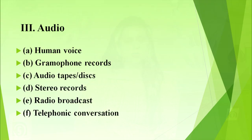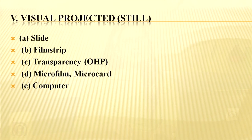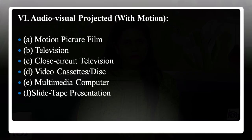The third type, audio, includes human voice, gramophone records, audio tapes and discs, stereo records, radio broadcast and telephonic conversation. The fourth category, visual non-projected three-dimensional aids, includes model, mock-up, globe, relief map, specimen, puppet and hologram. The fifth, visual projected still, includes slide, film strip, transparency, overhead projector, microfilm, microcard and computer. The sixth and last, audio-visual projected with motion, includes motion picture film, television, closed circuit television, videocassettes or disc, multimedia computer and slide-tape presentation.